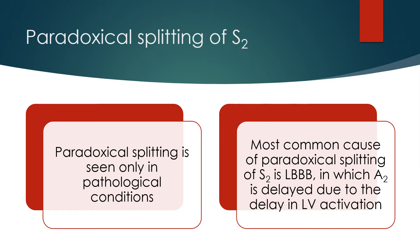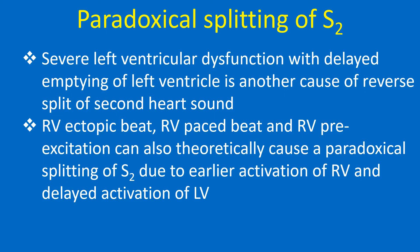The most common cause of paradoxical splitting of the second heart sound is left bundle branch block, in which aortic closure is delayed due to the delay in left ventricular activation. Severe left ventricular dysfunction with delayed emptying of the left ventricle is another cause of reverse splitting of the second heart sound.